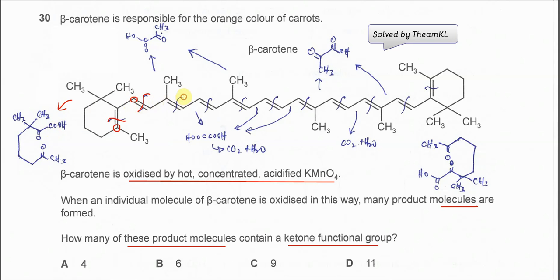Now let's look at another one. If this C=C double bond breaks, then this part will form — this carbon will form COOH (carboxylic acid). And this carbon will form a ketone. So this is how it looks after the C=C double bonds break. For this part, it will form this molecule, and this molecule has a ketone.